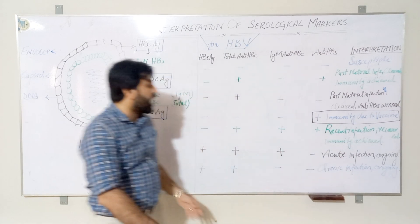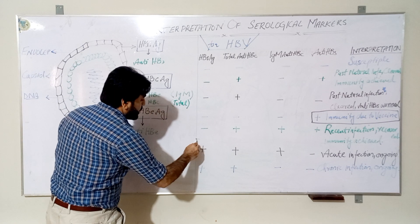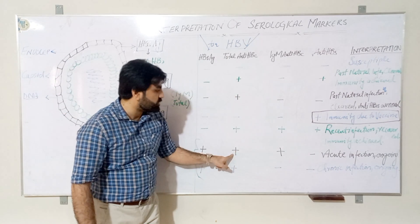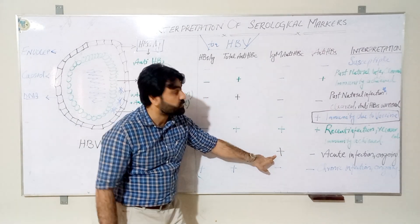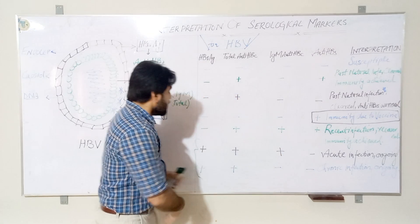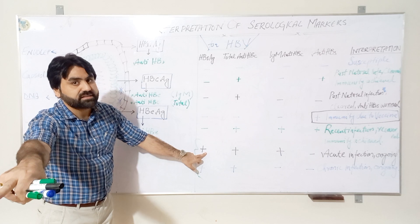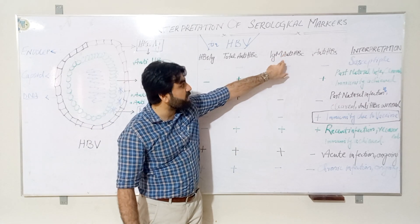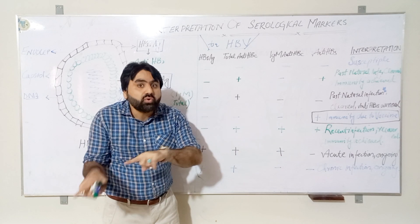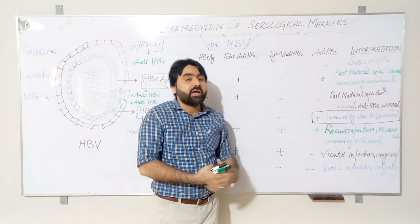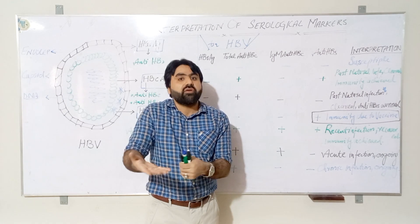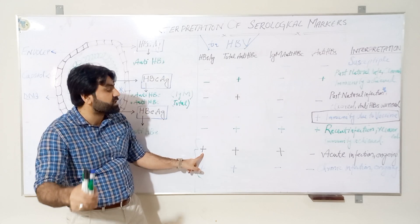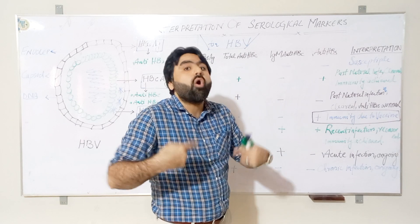If HBsAg is present, total anti-HBc is present, IgM anti-HBc is present, and anti-HBs is absent, the person is infected — the virus is present. IgM anti-HBc is used to differentiate acute from chronic infection because it disappears after six months. The presence of both HBsAg and IgM anti-HBc indicates acute infection in an ongoing stage.